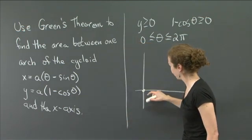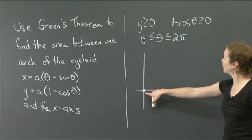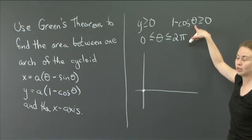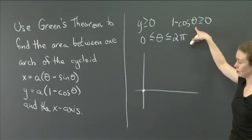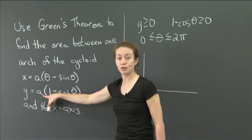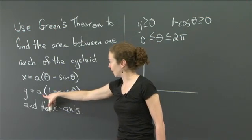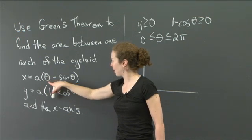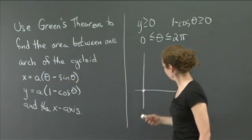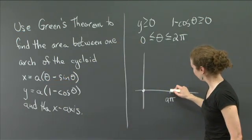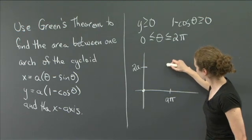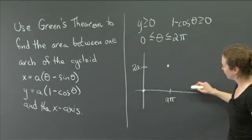I'll achieve maximum height at θ = π, because that's where cos θ = -1, so 1 - cos θ = 2. The y value when θ = π is 2a. The x value is a(π - sin π). Since sin π = 0, I get aπ.